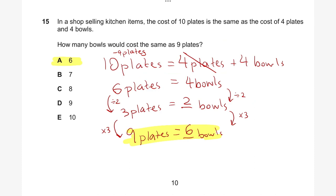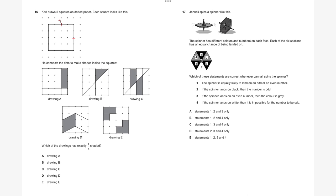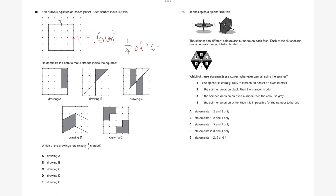Having a look at question sixteen. Carl draws five squares on dotted paper, each looking like this — four by four — giving an area of 16 centimeters squared. He connects the dots to make shapes inside the squares. The question is: which drawing has exactly one quarter shaded? One quarter of 16 is 16 divided by 4, which equals 4 centimeters squared — essentially four squares colored in.